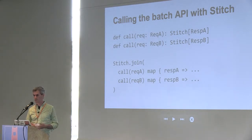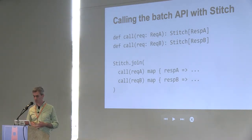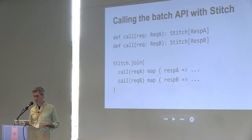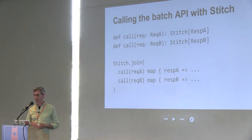This Stitch join is just saying that we want to make these two calls concurrently. If you've used the futures API, it has a similar future join. And we always get back a type-safe response.